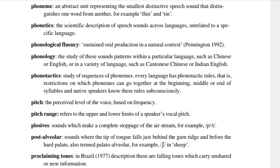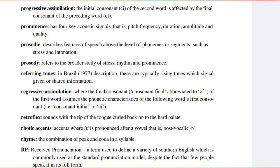Proclaiming tones: in Brazil's (1977) description, these are falling tones which carry unshed or new information. Progressive assimilation: the initial consonant (CI) of the second word is affected by the final consonant of the preceding word (CF). Prominence has four key acoustic signals: pitch frequency, duration, amplitude, and quality.